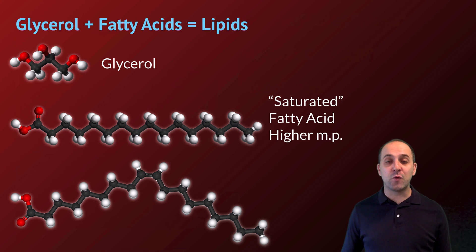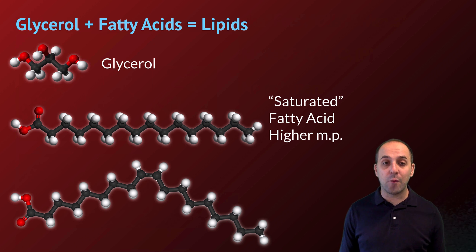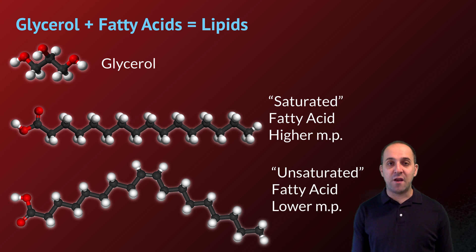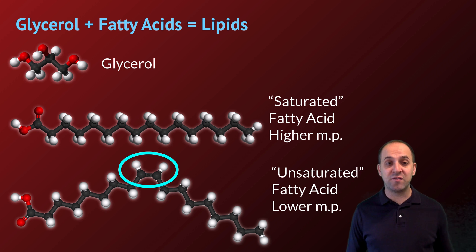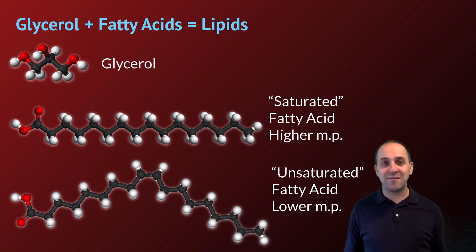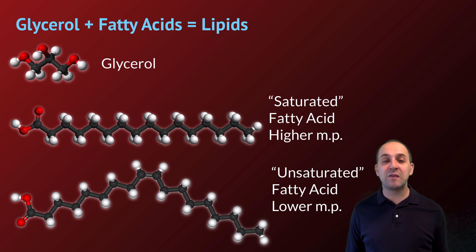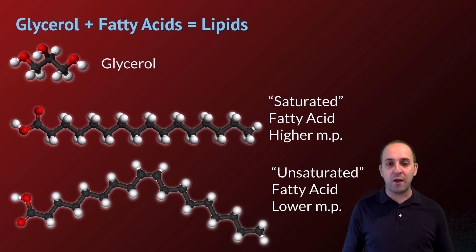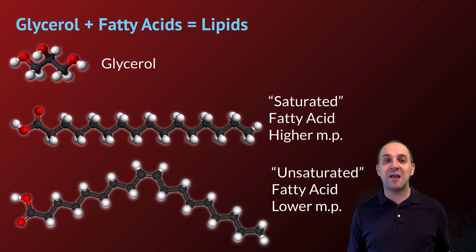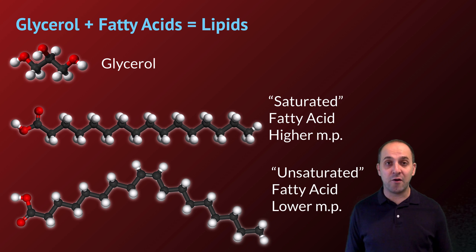A saturated fatty acid has a totally straight chain of carbons and hydrogens with only single bonds between the carbons. An unsaturated fatty acid has a double bond between two carbons in the chain, giving it a kinked shape. This influences properties: saturated fatty acids have a higher melting point because straight chains stack together easily, while unsaturated fatty acids have a lower melting point because their kinked shape makes stacking more difficult.